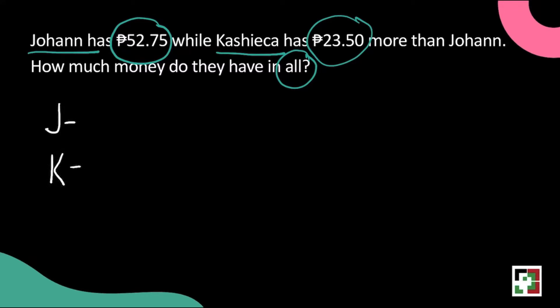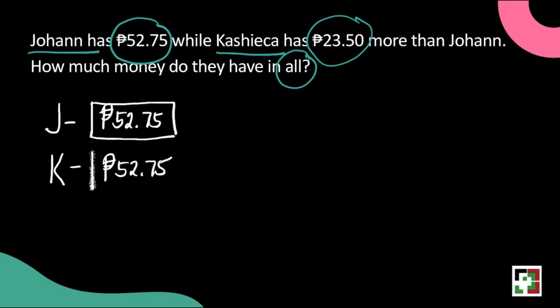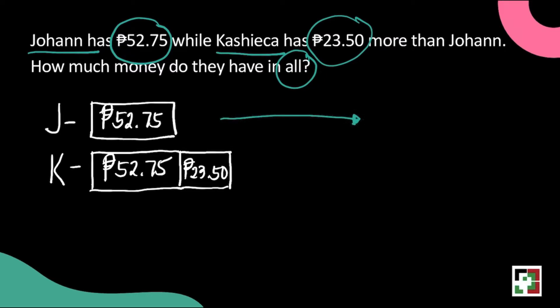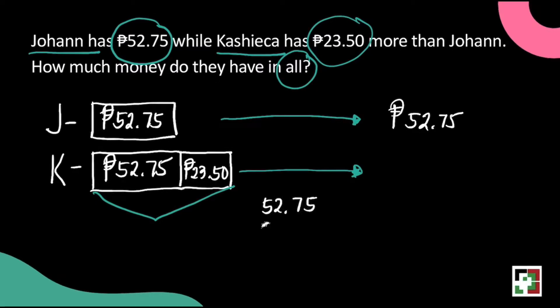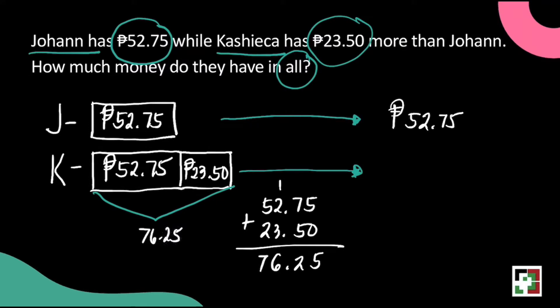Let's have Johan and Kashika here. Johan has 52 pesos and 75 centavos. Let's put it inside the box, and Kashika also has 52 pesos and 75 centavos plus 23 pesos and 50 centavos — because it says she has 23 pesos and 50 centavos more than Johan. All we need to do is add 52 pesos and 75 centavos and 23 pesos and 50 centavos, which gives us 76 pesos and 25 centavos.